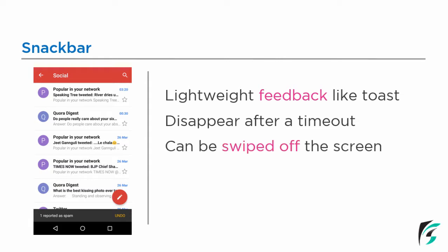The Snackbar can also be swiped off the screen. When the Coordinator Layout is used as the parent layout with the Snackbar, a property is added — it can be swiped off the screen. The Snackbar may also contain an action. On the left side we can see an undo button which helps perform an action — in this case, to undo the spamming of a message. There are also Snackbars which do not have an action button.